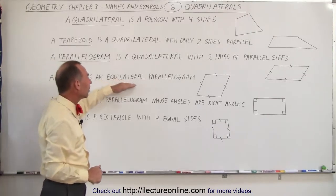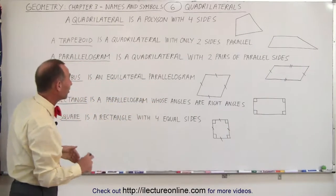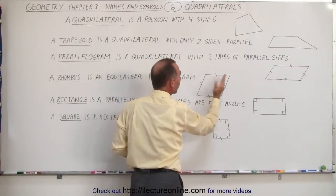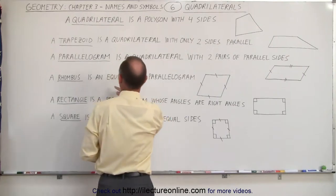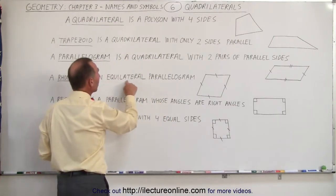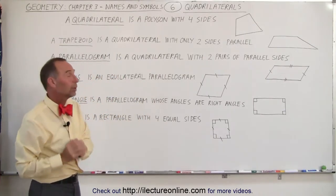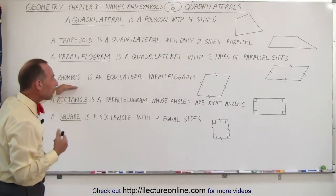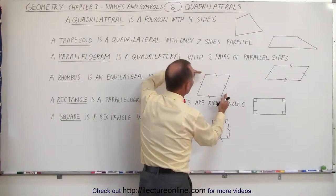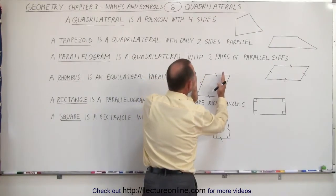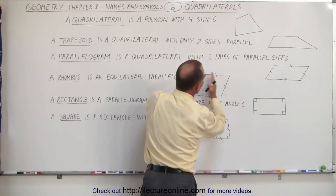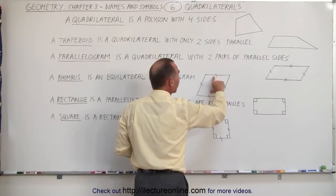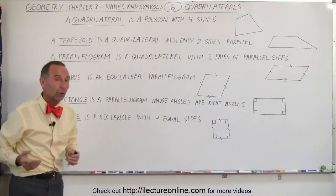A rhombus is an equilateral parallelogram. That means it's a parallelogram where the top and bottom side are parallel and the left and right side are parallel, but also all four sides must be equal in length. Equi means equal, lateral means side. A way to think about a rhombus is to take a square and push on one corner — it bends over and all four sides remain the same length, with both pairs of opposite sides parallel.